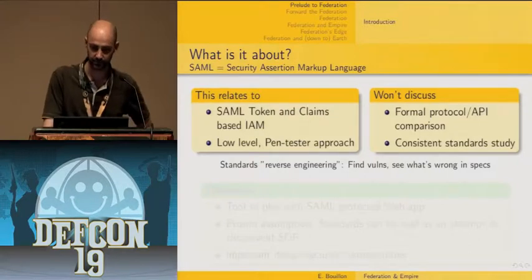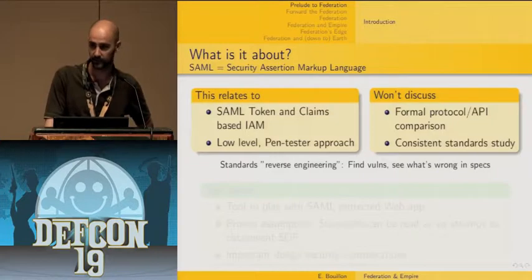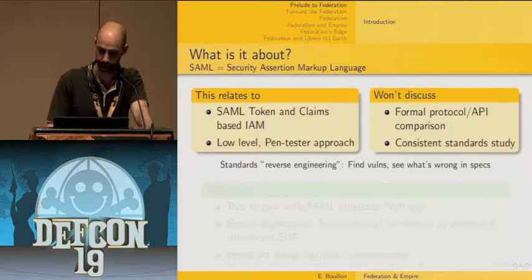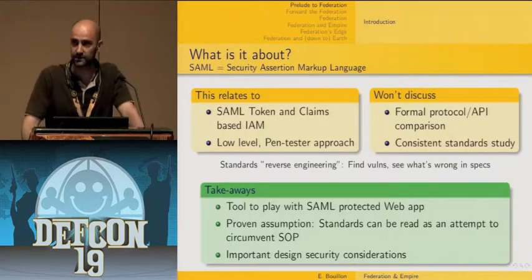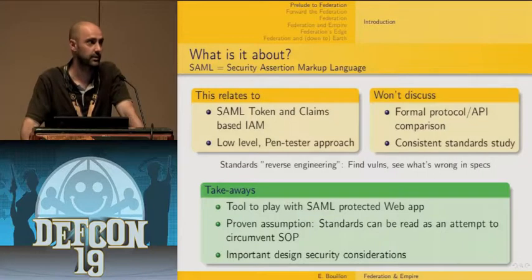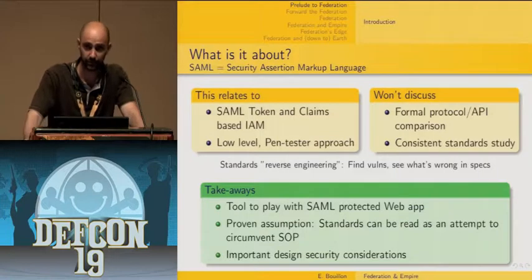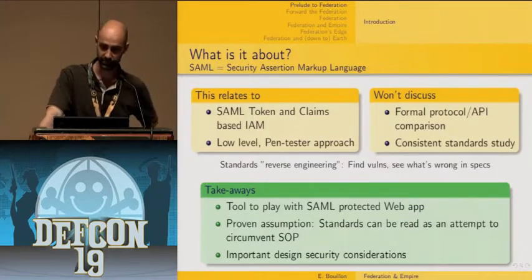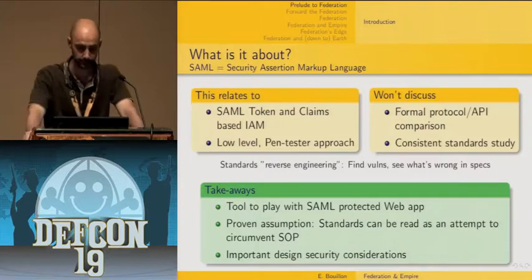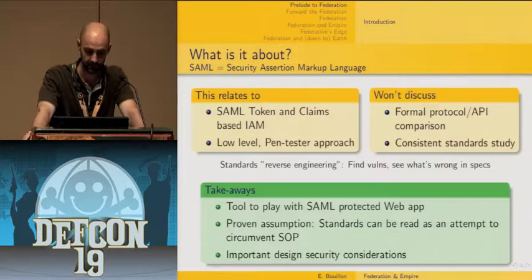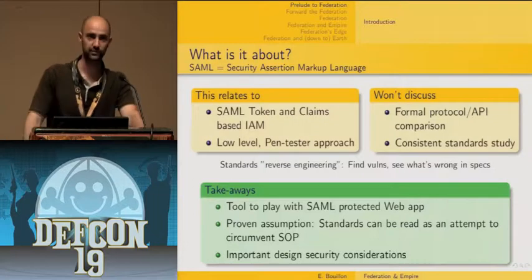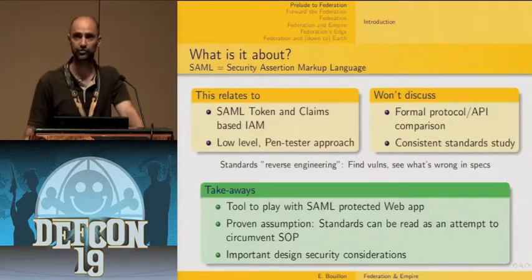The approach I've been using is some sort of standard reverse engineering — find vulnerabilities and then go back into the specification to see why something went wrong. The takeaways are: adapted tools for classical web application scanners to better cope with SAML-protected applications; demonstrating that the involved standards can be read as an attempt to circumvent the same origin policy; and some important security considerations before joining or creating such a federation.